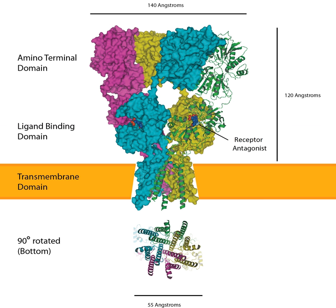The channel opens when two sites are occupied and increases its current as more binding sites are occupied. Once open, the channel may undergo rapid desensitization, stopping the current. The mechanism of desensitization is believed to be due to a small change in angle of one of the parts of the binding site, closing the pore. AMPARs open and close quickly — on the order of one millisecond — and are thus responsible for most of the fast excitatory synaptic transmission in the central nervous system.